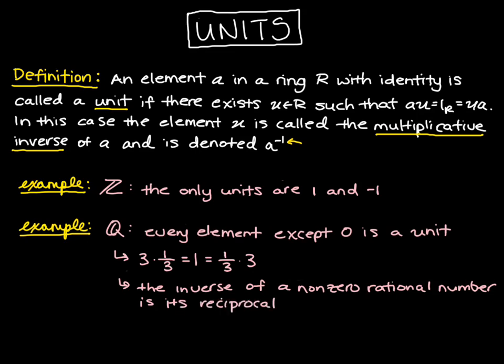And then finally let's look at the integers modulo 4. So recall that this is the set of congruence classes zero, one, two, and three. And so what are the units going to be here?